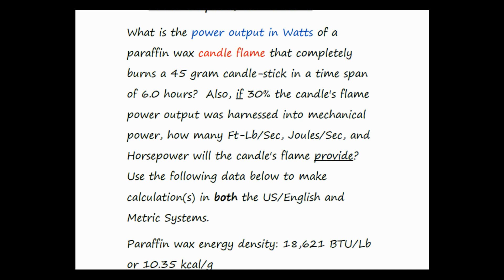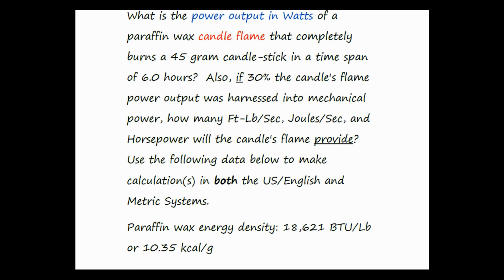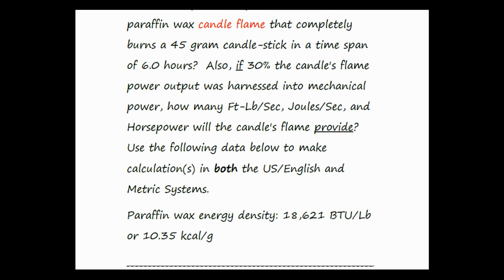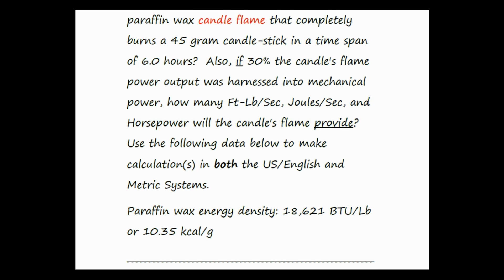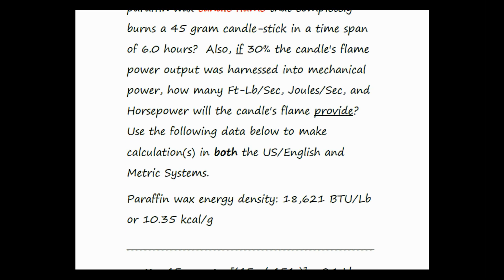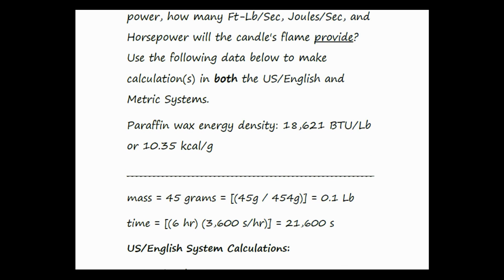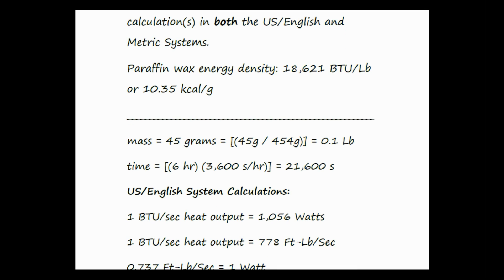Use the following data to make calculations in both the U.S. English and metric systems. Paraffin wax energy density is equal to 18,621 BTU per pound or 10.35 kilocalories per gram. We first start with the mass, 45 grams, and convert that into pounds weight. There are 454 grams to 1 pound, therefore 45 grams is equal to 0.1 pounds.